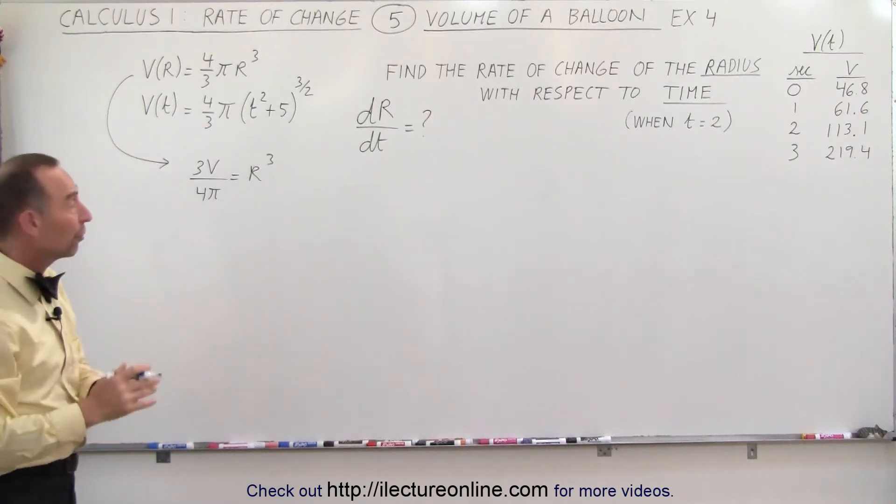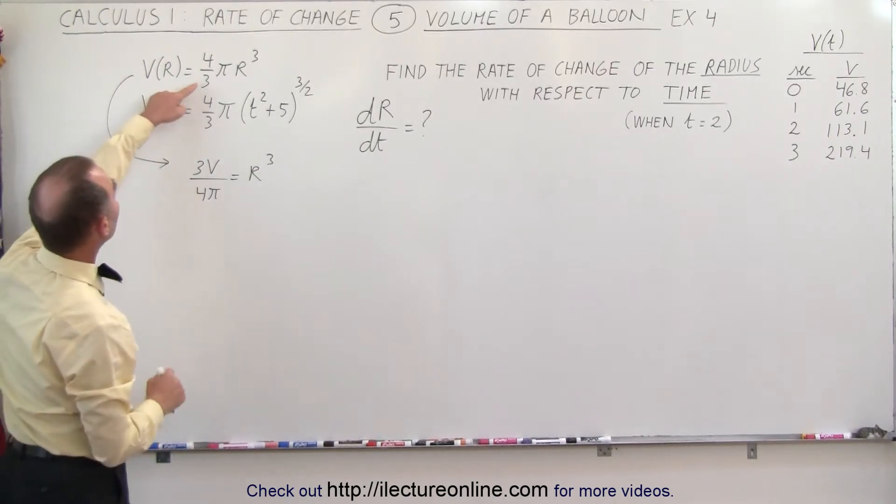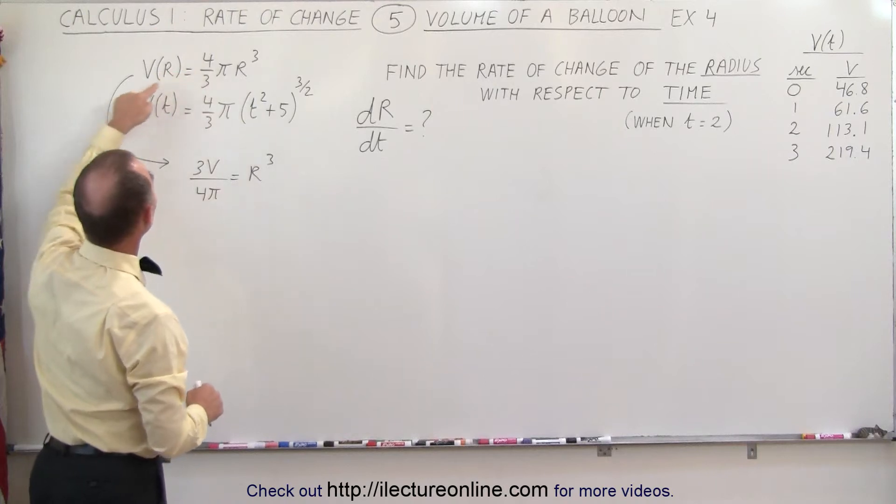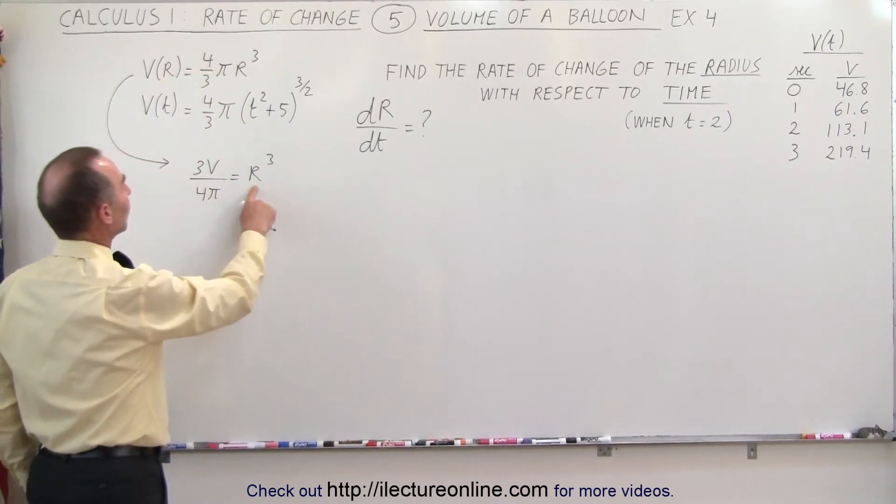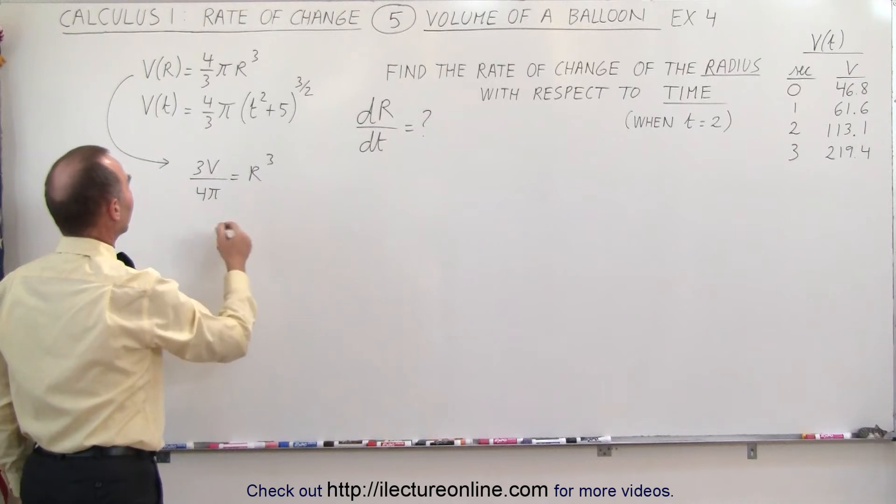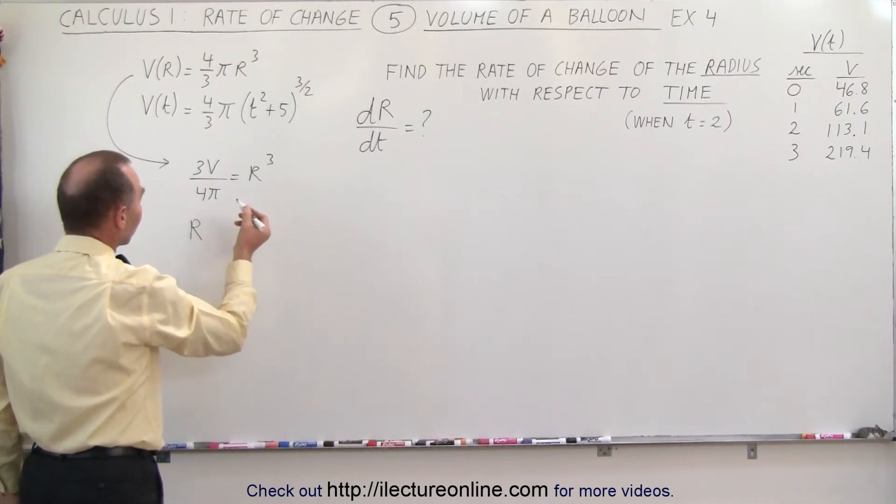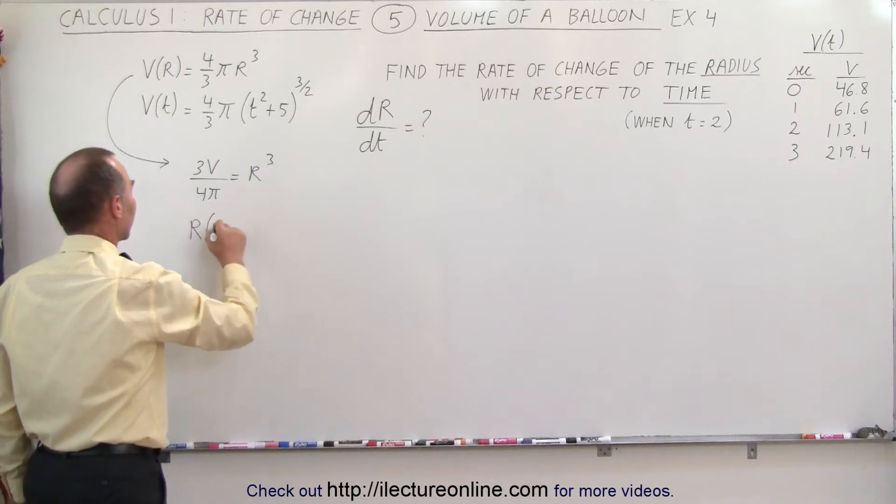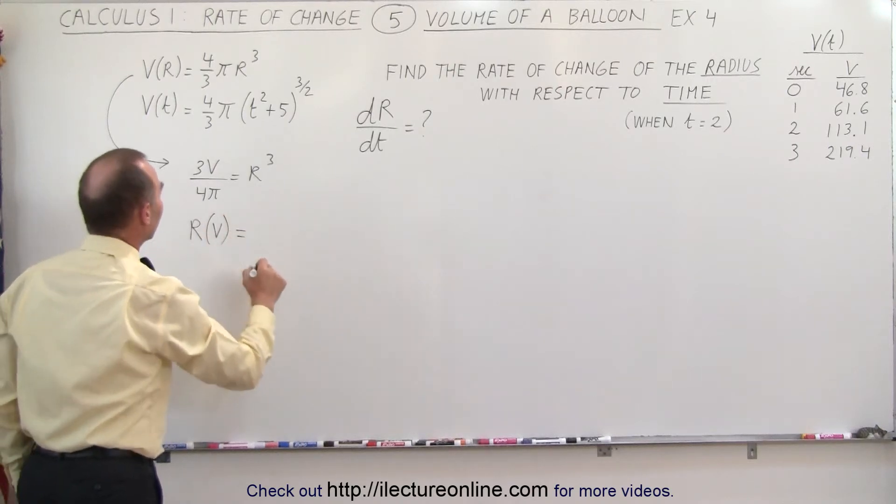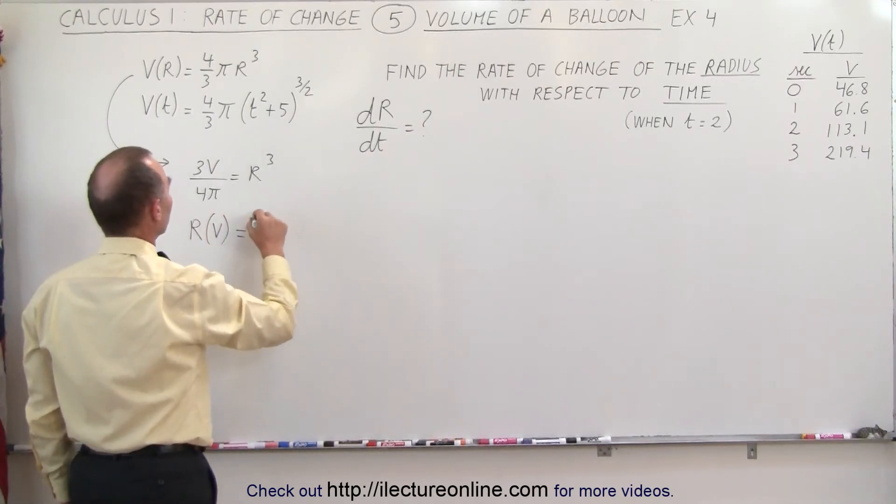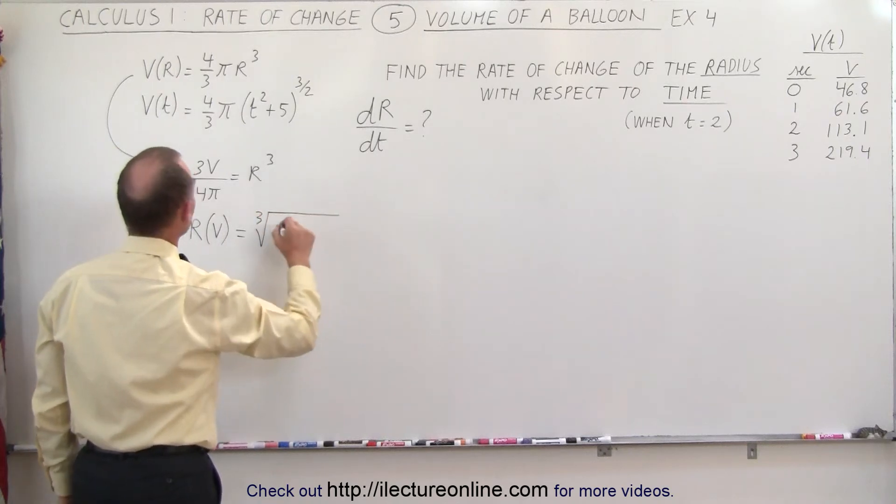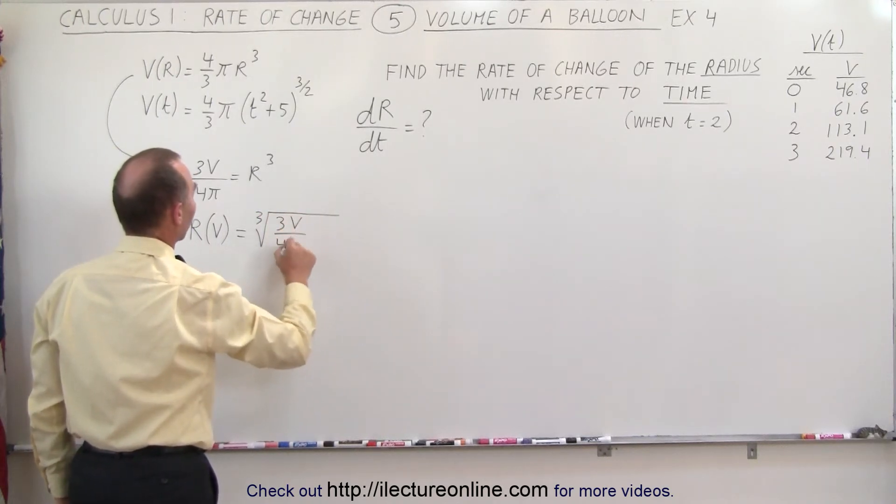And of course, if we then reverse the equation, so what I did here is I put the 3 up there, the 4 down here, the π down here to get this. And now, we're going to take the cube root of both sides, so we can say that the radius as a function of the volume, so to speak, is equal to the cube root of the quantity 3 times the volume over 4π.